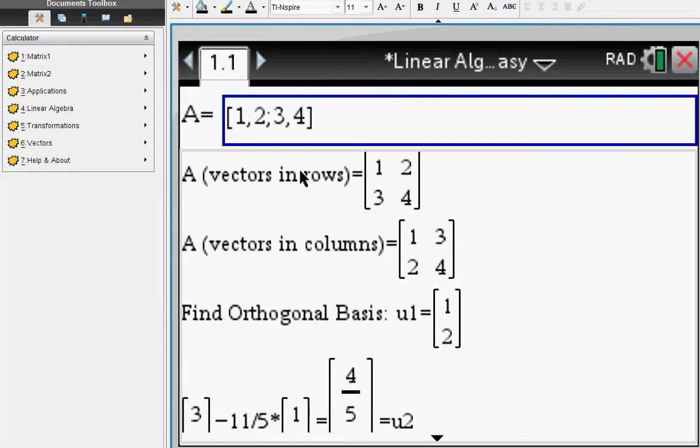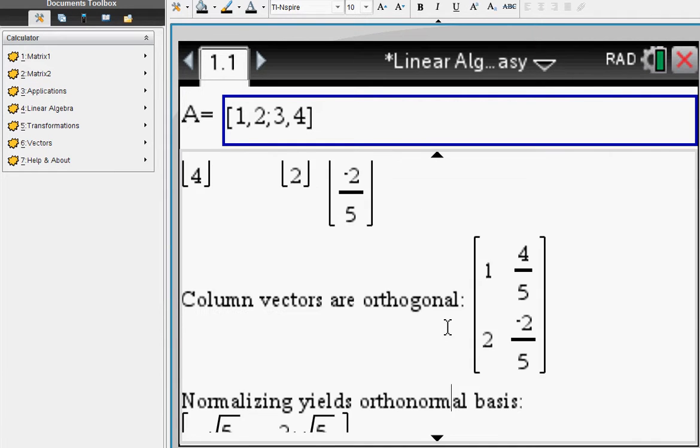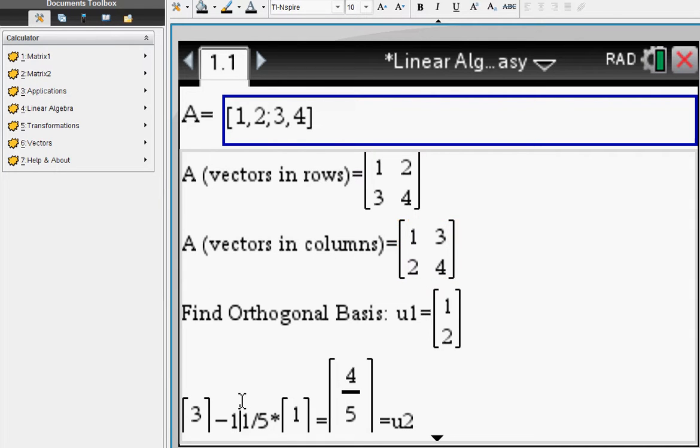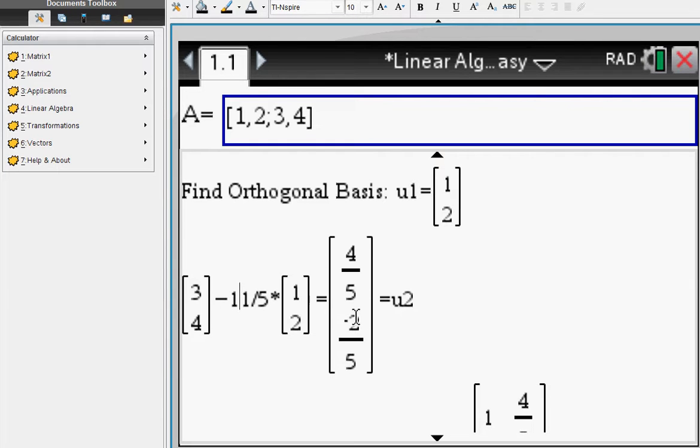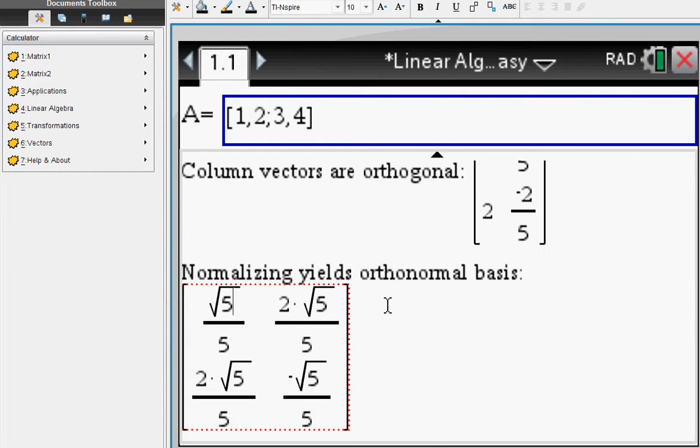Let's do orthonormal basis. Enter vectors in columns: one, two, three, four. Then you do your steps in order to arrive at your basis. After normalizing your vectors, you arrive at this orthonormal basis. It works for three by three or four by four matrices, no problem.